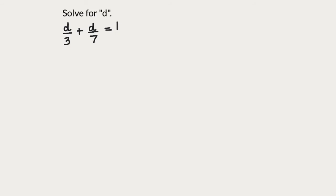How do we add fractions? By making the denominator the same. We see that we have 3 here in the denominator and 7 here in the denominator. The least common multiple of these two numbers is 21, so we can make the denominators to be 21.